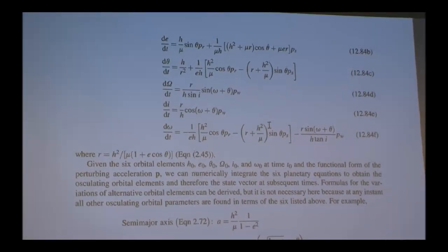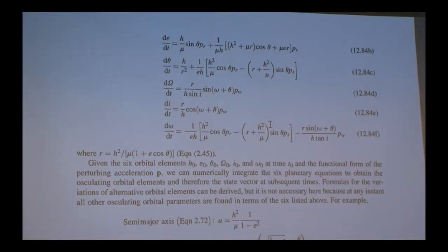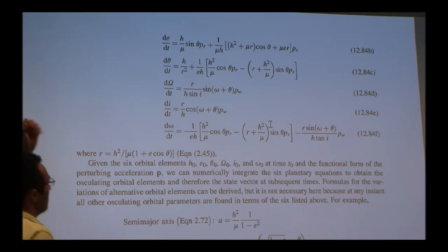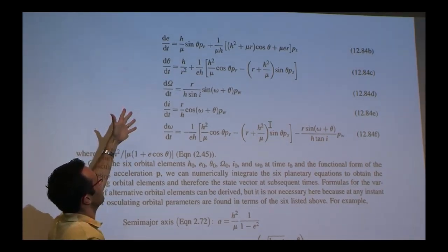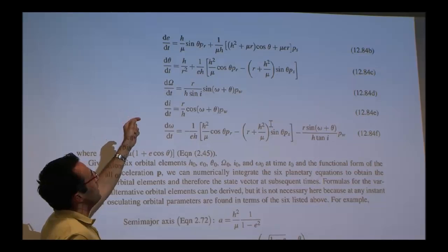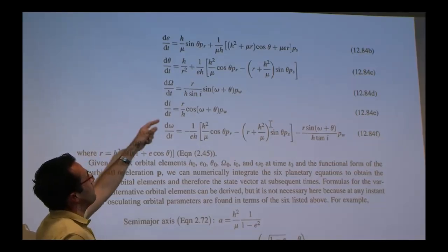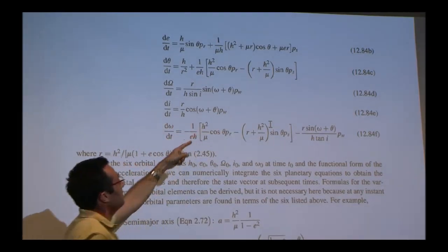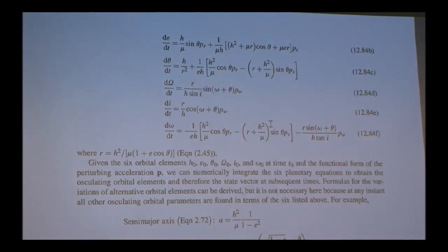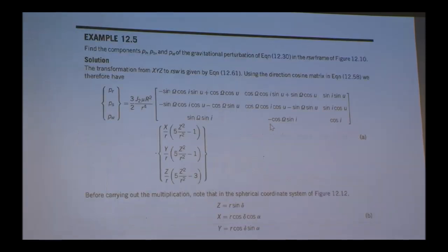The Gauss Variational Equations are first-order differential equations in the six orbital parameters, where the perturbation acceleration comes in as PR, PS, PW. R, S, and W are the three directions of LVLH. Anytime you have a different perturbation, you have to figure out how you project it into that basis.